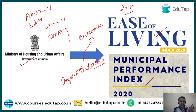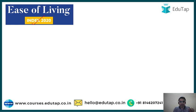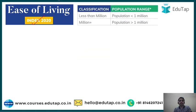Let's get into the details and find out the major findings of these two indexes. The Ease of Living Index 2020 evaluates the quality of life citizens are living in their cities, as well as the impact of government initiatives for urban development. This index classifies Indian cities into two categories: cities with a population less than one million and cities with a population more than one million.